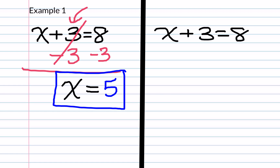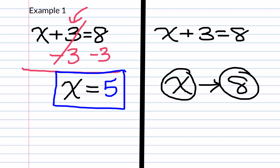The other method we would like to teach you is known as the mapping method. First, we always start with our variable, then we go to our solution. The question is, how do we get from our variable to our solution? In this example, we have to first add 3. So we draw our mapping from x plus 3 to get 8. Since we want to figure out what x is equal to, we must work in reverse, going back from 8 to x using our inverse operation, which is subtract 3.